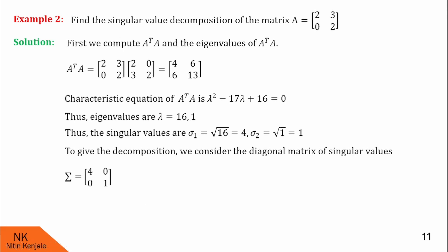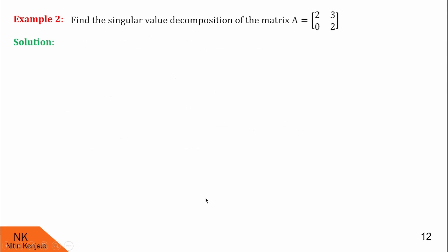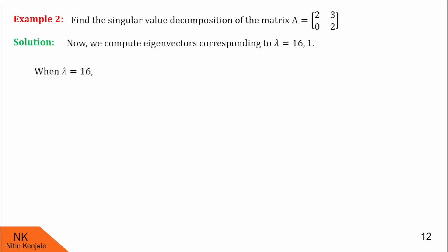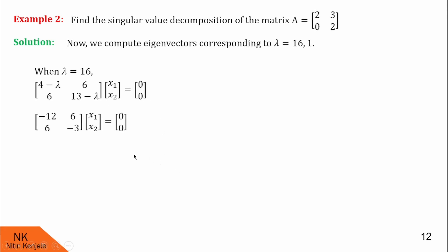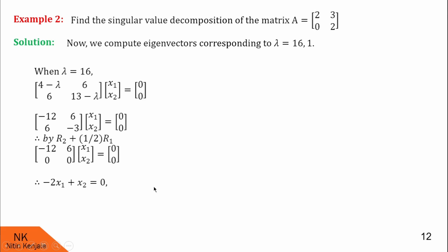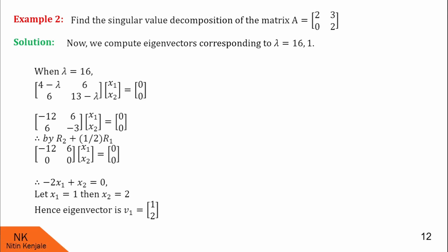Next, we find the eigenvectors of A transpose A for eigenvalues 16 and 1. For lambda equals 16, substituting into A transpose A minus lambda I into x equals 0 and using transformation R2 plus half R1, we get the equation minus 12x1 plus 6x2 equals 0, which simplifies to minus 2x1 plus x2 equals 0. Assigning x1 equals 1 gives x2 equals 2. Therefore the eigenvector corresponding to lambda equals 16 is (1, 2).